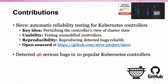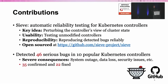To date, SIEVE has detected 46 serious bugs in 10 popular Kubernetes controllers. These bugs lead to severe consequences including system outage, data loss, security issues, and so on. We reported all the bugs, and so far 35 are confirmed and 22 are fixed. The developers appreciated the bugs we reported so much that they even sent us swag — and this is how I got a free T-shirt as a grad student. I'm actually wearing one of those T-shirts today.